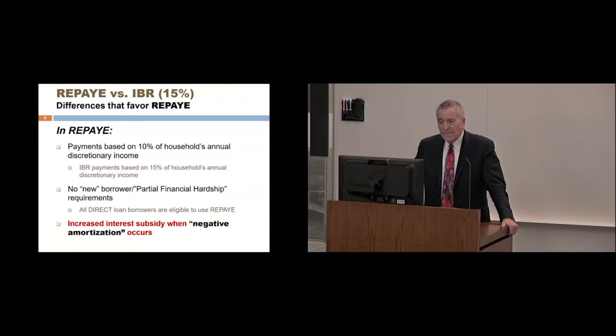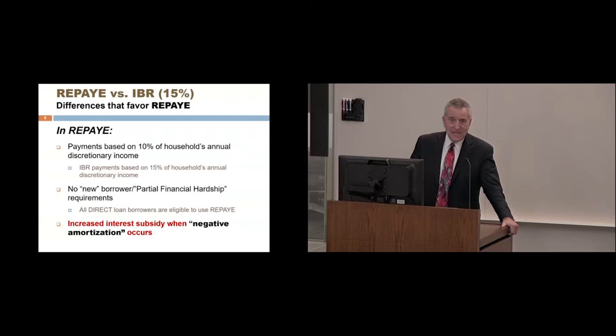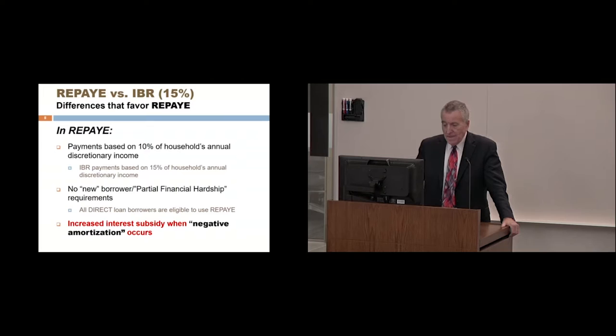The differences that favor REPAYE over the original IBR plan are straightforward. First and most obvious: payments in REPAYE are based on 10% of household annual discretionary income, versus 15% in IBR — meaning your monthly payment in REPAYE would be one-third less than in the 15% IBR plan. There are no new borrower or partial financial hardship requirements, so all direct loan borrowers are eligible to use REPAYE. And as with the comparison to PAYE, in REPAYE there's the opportunity for increased interest subsidy when negative amortization occurs.